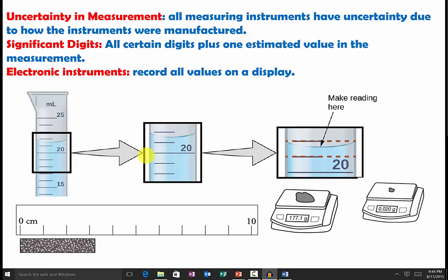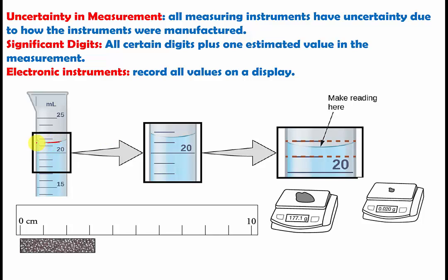And from those uncertainties, we have significant digits. So let's look at this graduate cylinder. We have this watermark reading at the meniscus level right here, so we are reading right there.